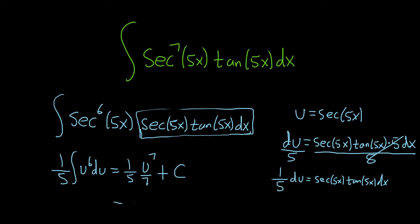And we're pretty much done. 5 times 7 is 35. Replace u with what it was. So u was secant. So this is secant to the seventh power of 5x. And we have our constant of integration capital C.